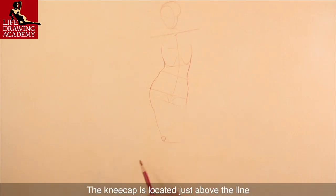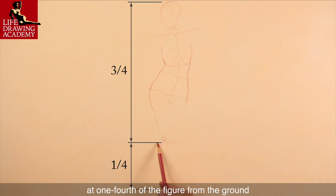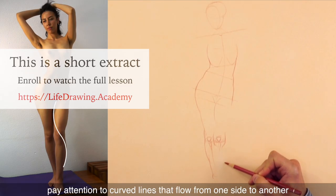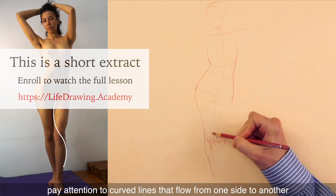The kneecap is located just above the line at one-fourth of the figure from the ground. When drawing a leg, pay attention to the curved lines that flow from one side to another.